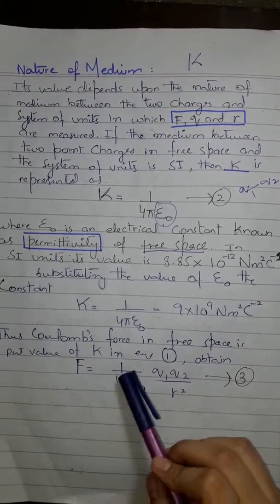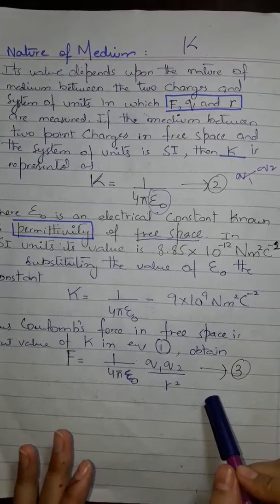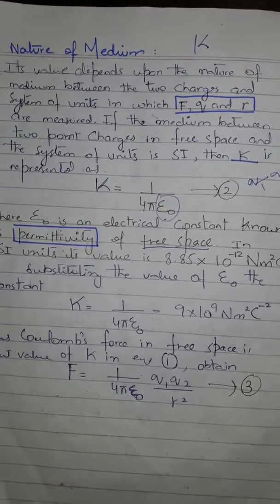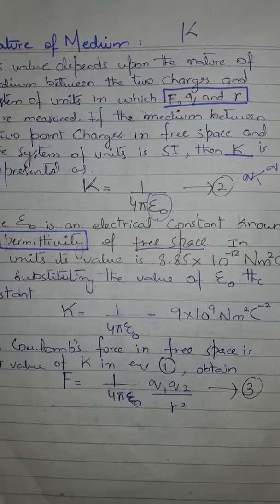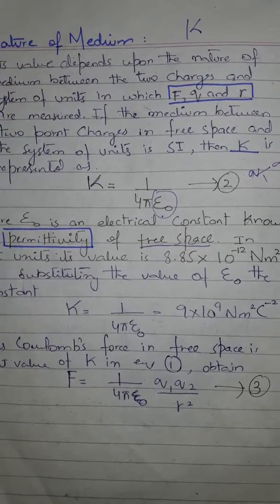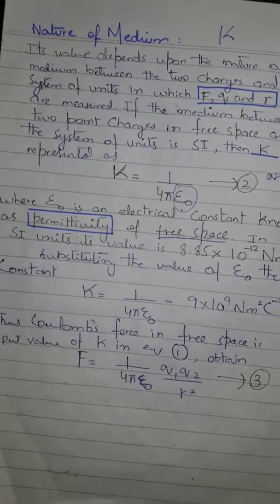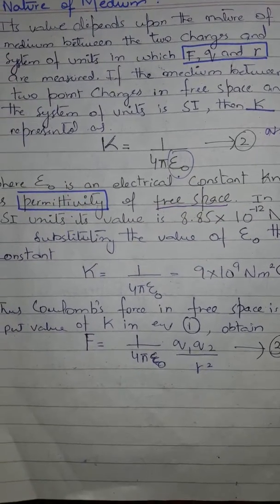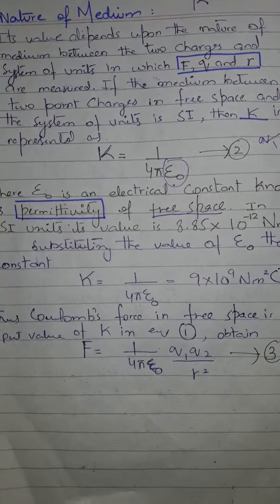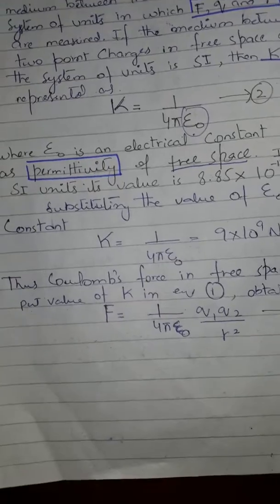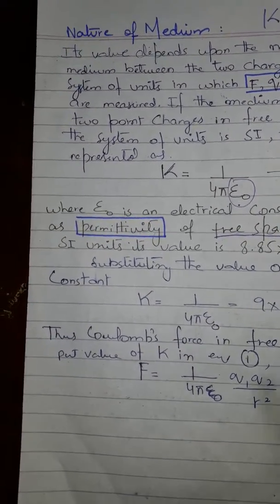The value of ε₀ is 8.85 × 10⁻¹² N·m²/C². Substituting this value, we get k = 9 × 10⁹ N·m²·C⁻². Thus, the Coulomb force in free space, substituting k into equation one, gives F = (1 / 4πε₀) · (q1·q2 / r²), which is equation number three.